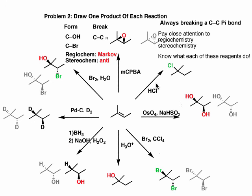In conclusion, recall that every single reaction we've talked about here involves breaking a carbon-carbon pi bond. Pay very close attention to the regiochemistry of each reaction — Markovnikov, anti-Markovnikov, or not applicable — and the stereochemistry: is it syn, is it anti, or is it a mixture of both? Of course, it's very important to know what each of these reagents does and the mechanism for these reactions where applicable, because this is really the bare minimum knowledge to go into your exam with if you hope to succeed. Your instructor will assume you know all of this, and they're probably going to be testing you on more twisted examples of these questions. We'll talk about those in future videos — thank you for watching.